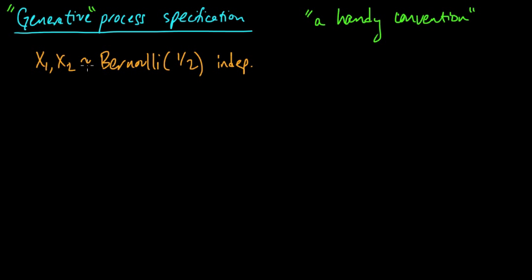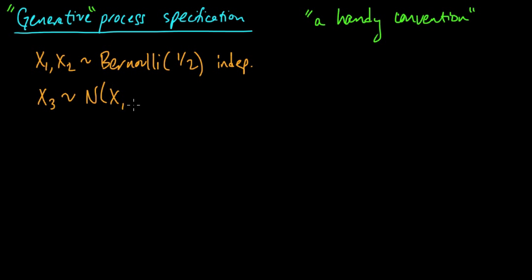So I'm giving you the generative process specification for a particular distribution with x1 and x2. Then let's define x3 as a random variable, and let's give it some distribution that depends on x1 and x2. Maybe it's Normal with mean x1 plus x2, and variance sigma squared, some constant sigma squared.